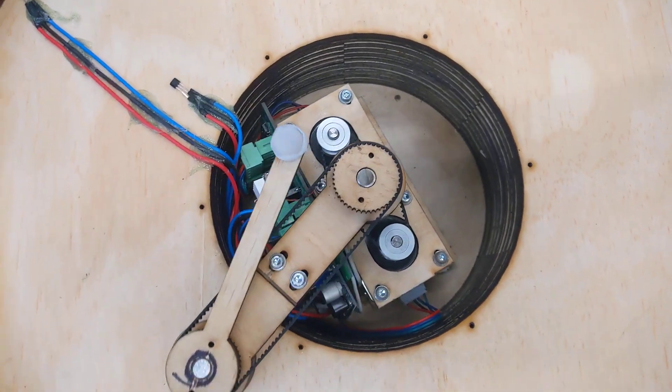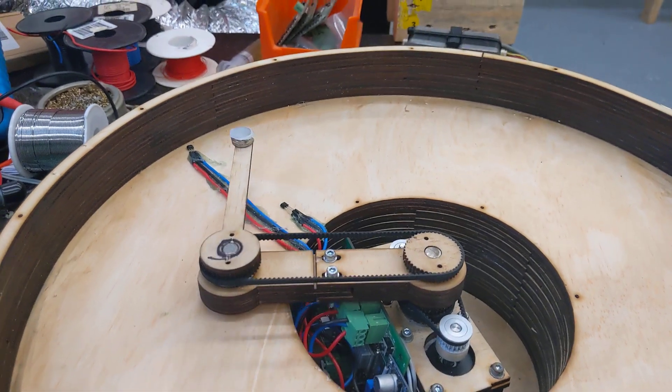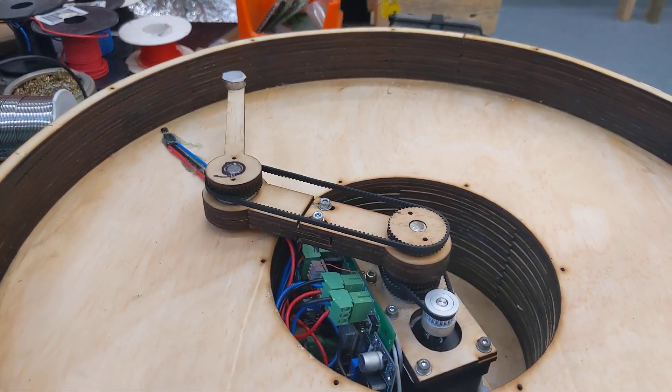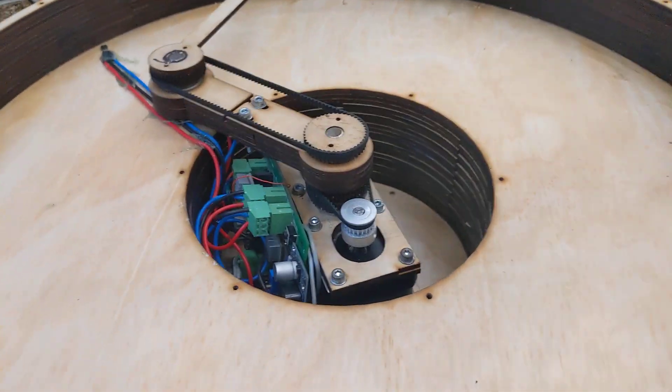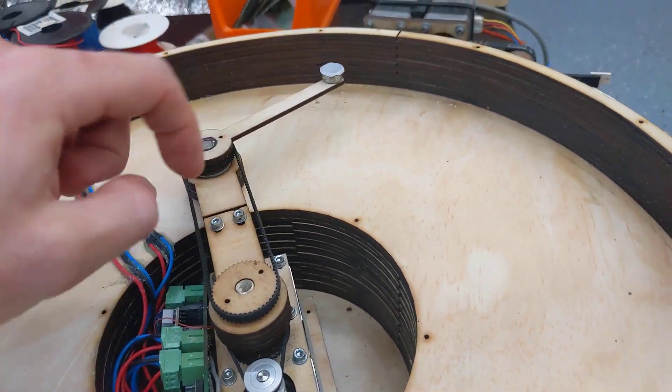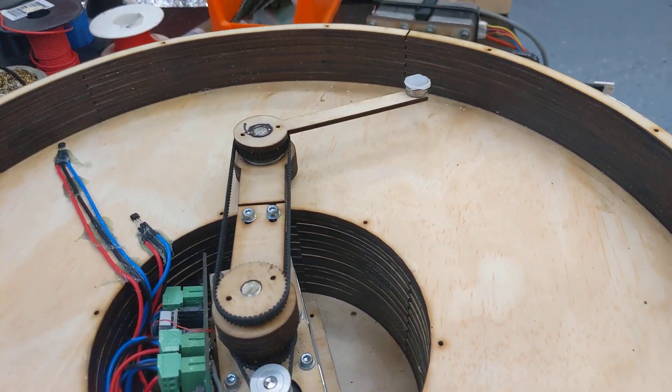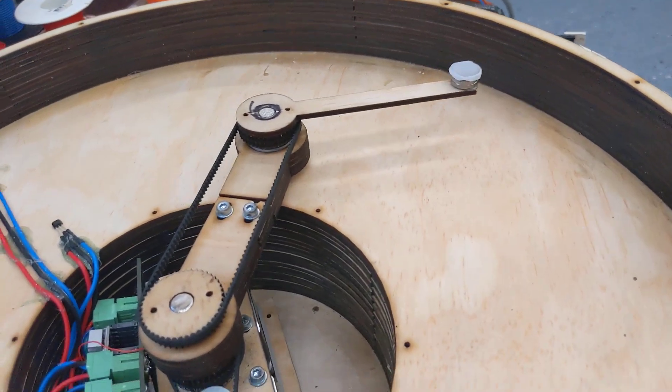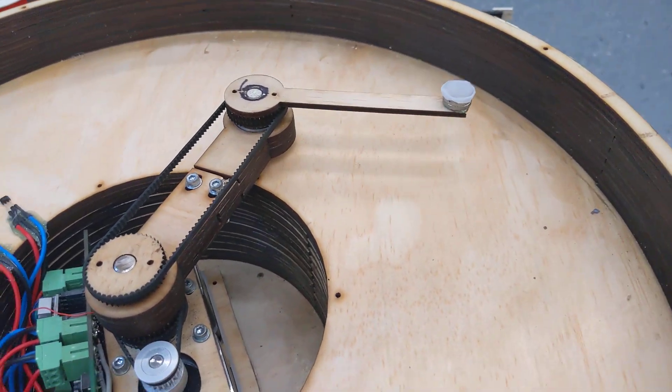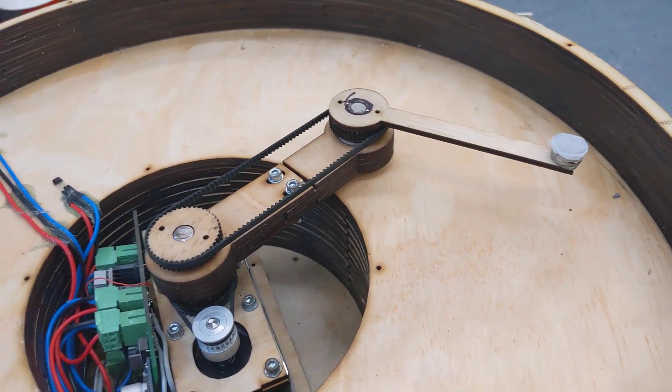So I did a pretty precise job of that, I'm quite happy with how that works. So what other changes have I made: arm one here is thicker now and has two bolts. I think I'm going to give up on the dynamic belt tensioning thing.